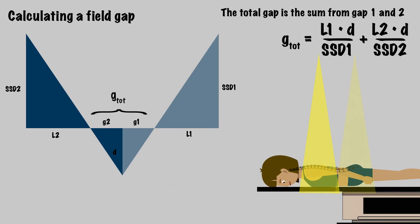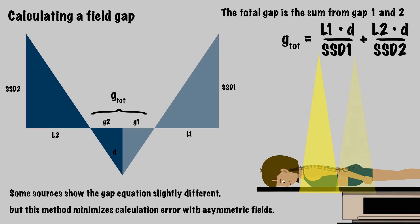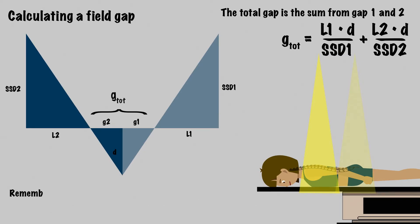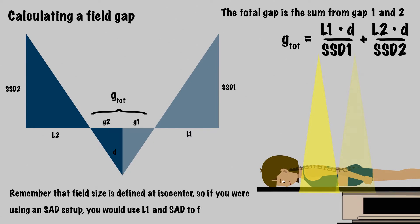This is the gap that could be feathered to minimize those hot and cold spots. Some sources show the equation slightly differently, but this method minimizes calculation error with asymmetric fields. Also, remember that field size is defined at isocenter, so if you were using an SAD setup, you would use L1 and SAD to find this gap.